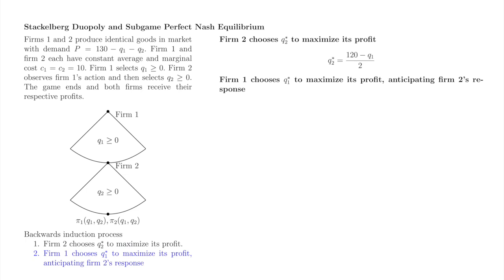Now that we've found firm 2's strategy, we move up the tree to determine firm 1's strategy. Firm 1's problem, in which firm 1 anticipates firm 2's response when selecting q1, is where the solutions of Stackelberg and Cournot duopoly diverge. Firm 1's anticipation of firm 2's response means mathematically that firm 1 maximizes its profit subject to constraint by firm 2's response.